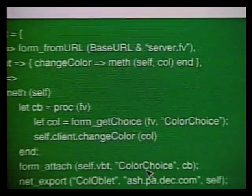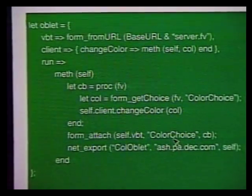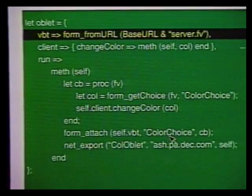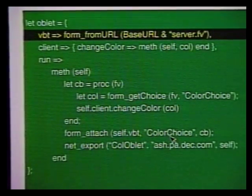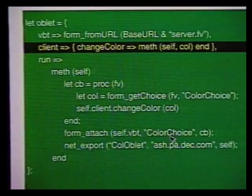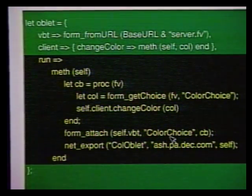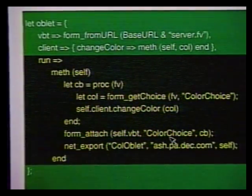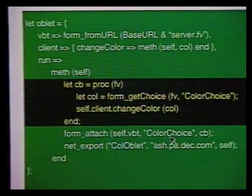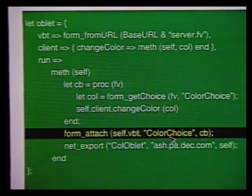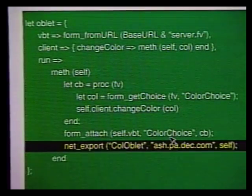Here is the Oblique code. This code defines an object with three parts: a field named VBT that is bound to the UI we have just built with FormsVBT, a field named client that is bound to another object, and a method named run. Visiting a web page containing an oblet causes the oblet to be retrieved, the UI contained in VBT to be displayed on the web page, and the run method to be executed. This run method defines a callback procedure named CB, attaches this callback procedure to the UI's radio component, and finally registers the oblet with a name server on the machine named ash.